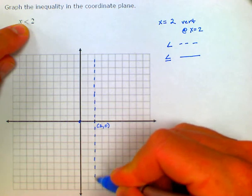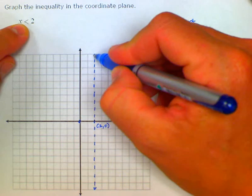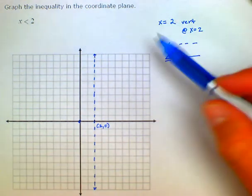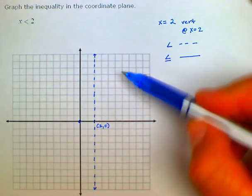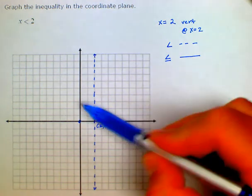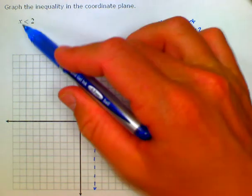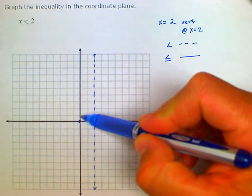Now we just have to figure out which way to shade, where the solutions fall. Whether these points over here fall in the solution set or whether these points here fall in the solution set. Again, this is telling me that at any y value, x is going to be less than 2.